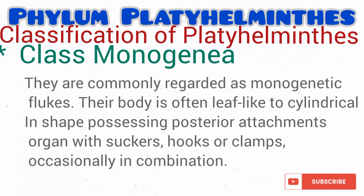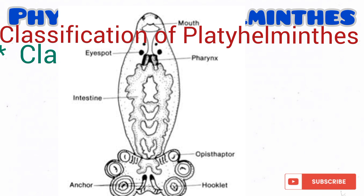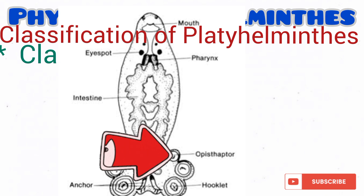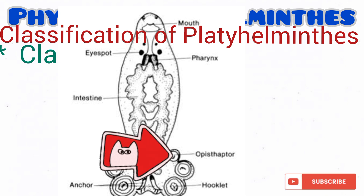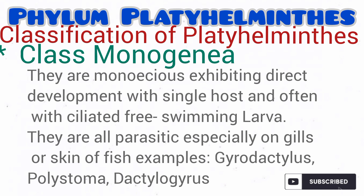The next class is Class Monogenea, which are commonly regarded as monogenetic flukes. They are leaf-like to cylindrical in shape, possessing a posterior attachment organ with suckers or hooks in some cases. As you can see from the diagram, you can see the posterior attachment organ called the haptor or opisthaptor. They are hermaphroditic, exhibiting direct development with a single host. They are usually parasitic on the gills and skin of fishes. Examples include Gyrodactylus, Polystoma, and others.